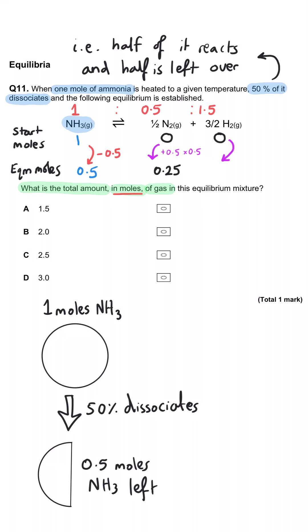And we'll be producing 0.5 multiplied by 1.5, so in other words 0.75 moles of hydrogen.